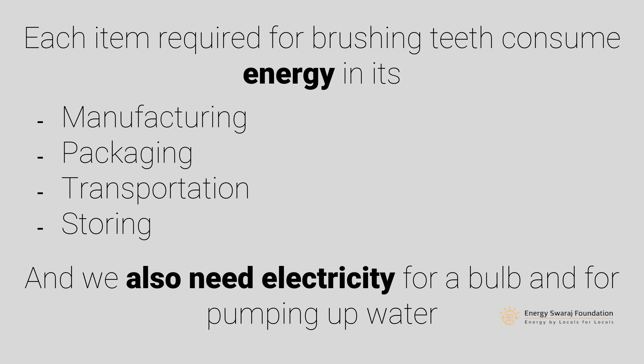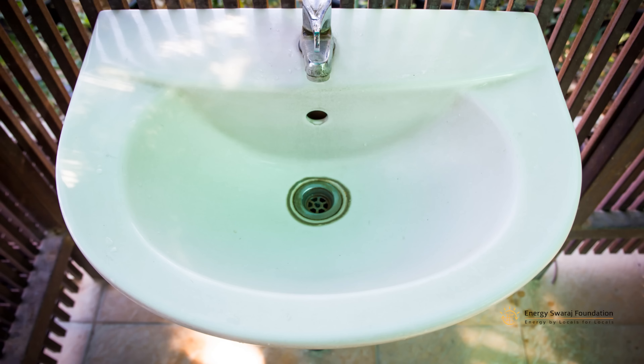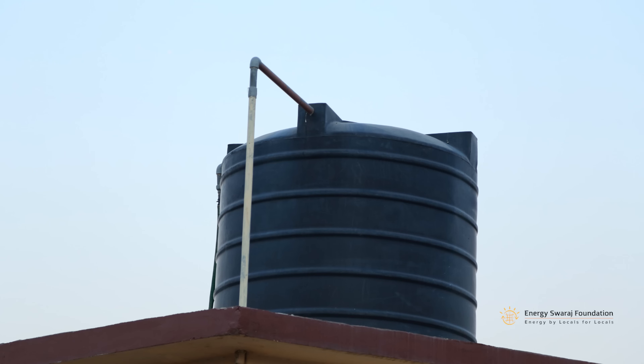You don't only use toothpaste for brushing your teeth — you need many other items. You also require a toothbrush, which goes through the same journey: manufacture, package, transport, store. You also need a water pump, and again the same journey applies. You also need a washbasin, which is a ceramic material requiring very high temperatures to manufacture — so making, storing, and transporting a washbasin also requires a lot of energy.